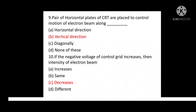Question No. 10: If the negative voltage of control grid increases, then intensity of electron beam? Option A: Increases. Option B: Same. Option C: Decreases. Option D: Different. Correct answer is Option C: Decreases.